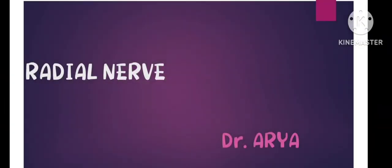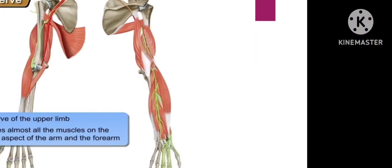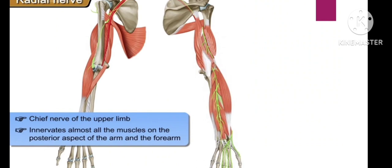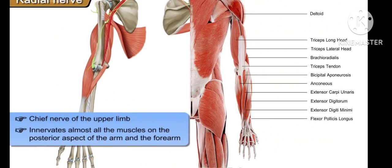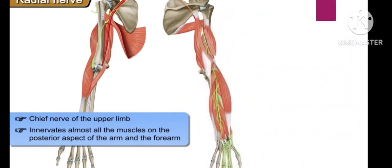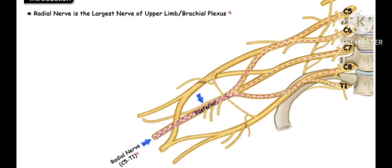Hi, hello and welcome back to my channel. In this video we will discuss the anatomy of the radial nerve. The radial nerve is the chief nerve of the upper limb. It innervates almost all the muscles of the posterior aspect of the arm and forearm, so it is called the nerve of the extensor compartment. Before knowing the radial nerve, you should know the nerve root.